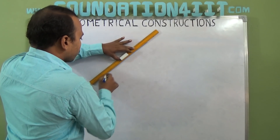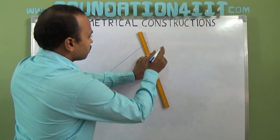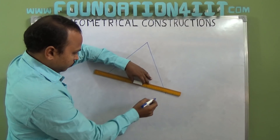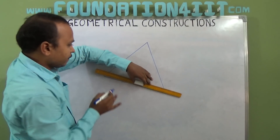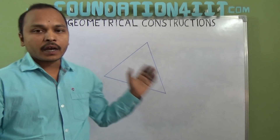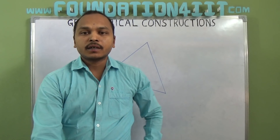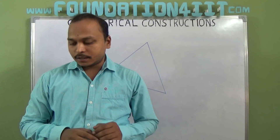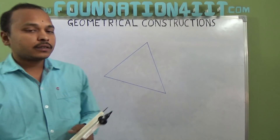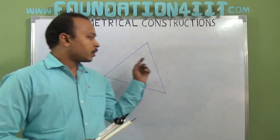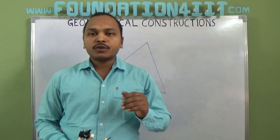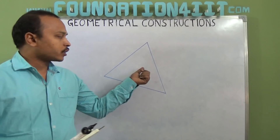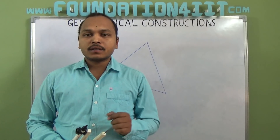For this triangle, I am going to construct an incircle. The circle will touch each and every side — it should touch all three sides. For that, we need to find the incenter. We get the incenter by bisecting any two angles. If you bisect any two angles, their point of concurrence is called the incenter.